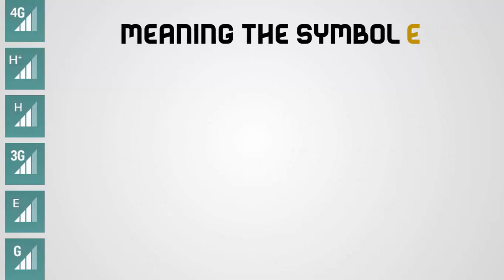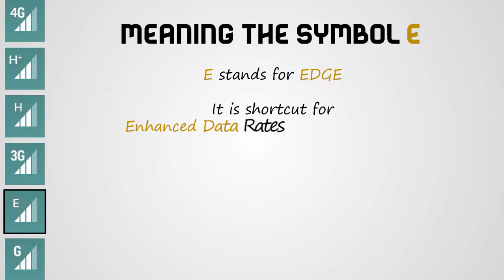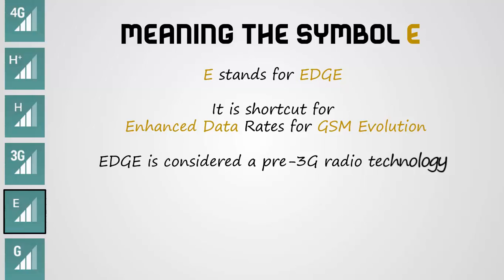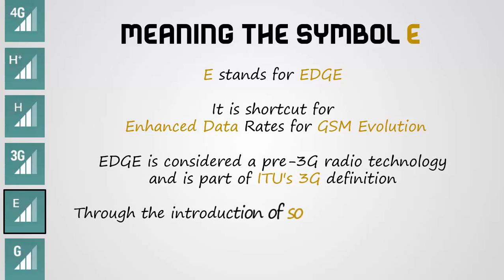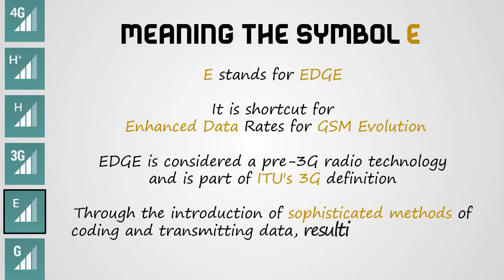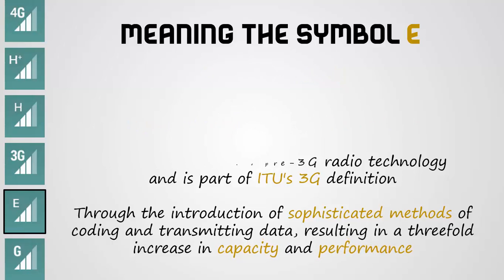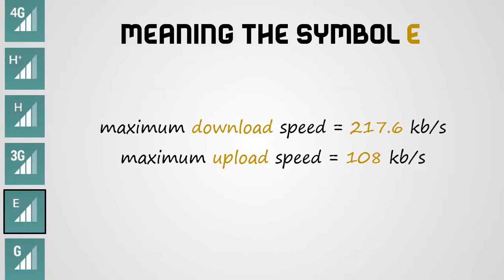Meaning of the symbol E: E stands for EDGE, which is short for Enhanced Data Rates for GSM Evolution. EDGE is considered a pre-3G radio technology and is part of ITU's 3G definition. Through the introduction of sophisticated methods of coding and transmitting data, resulting in a three-fold increase in capacity and performance. Maximum download speed equals 217.6 kbps.